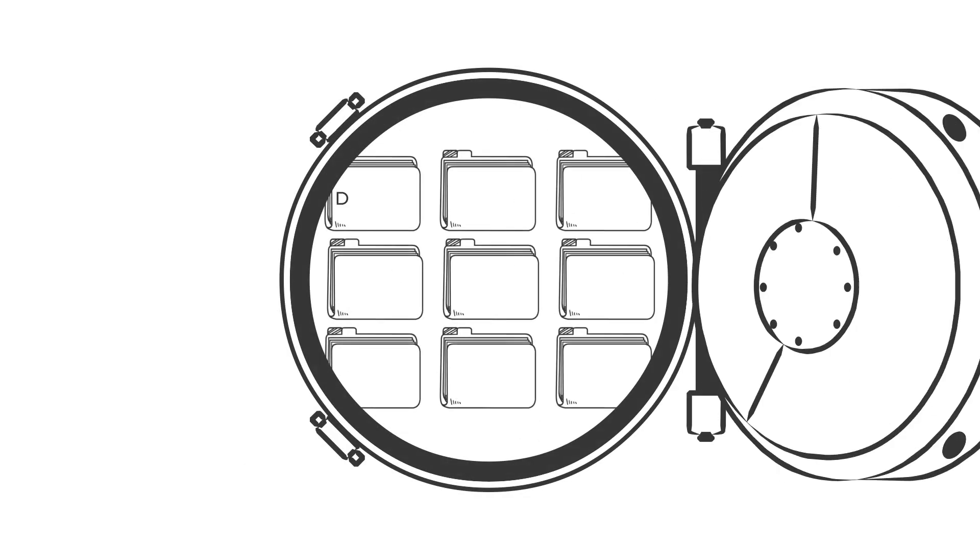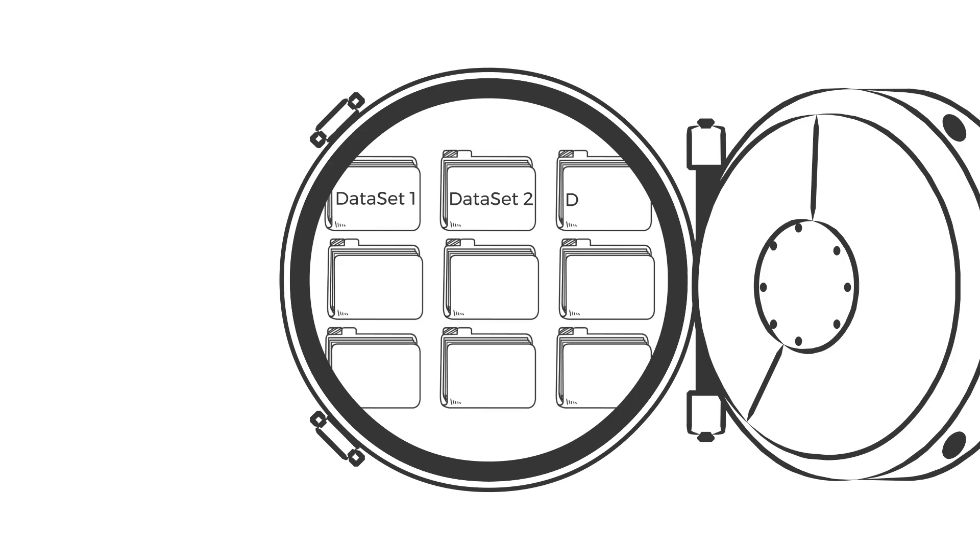When Historian saves your data, it organizes it into data sets. A data set is a collection of sensors, or tags, that you choose to group together. Since you license Historian only by tag count, you can create as many data sets as you need.